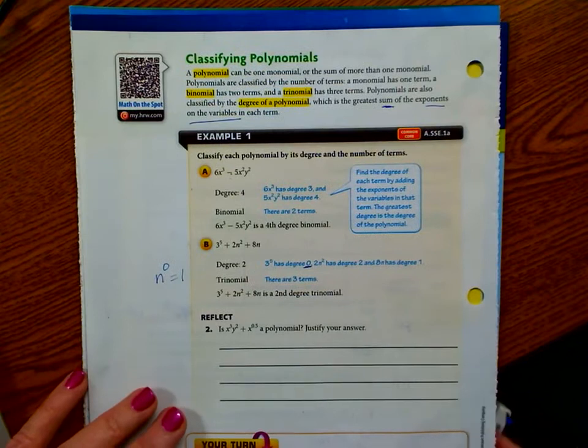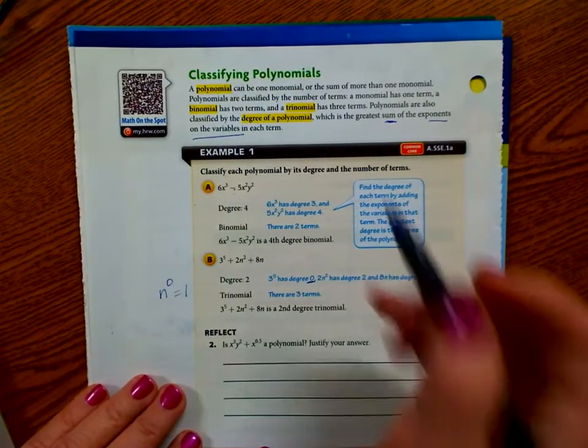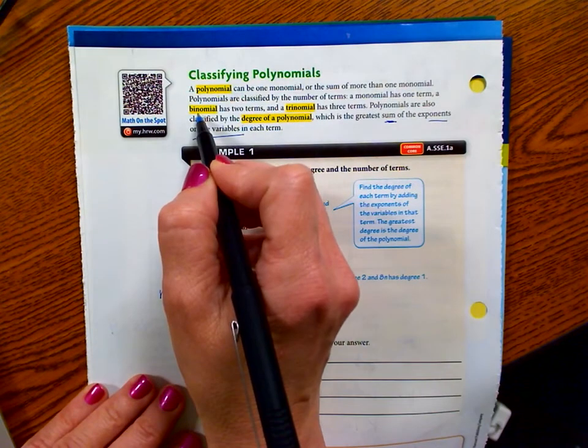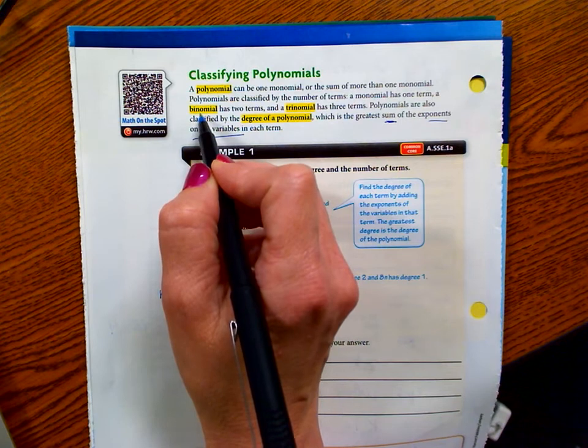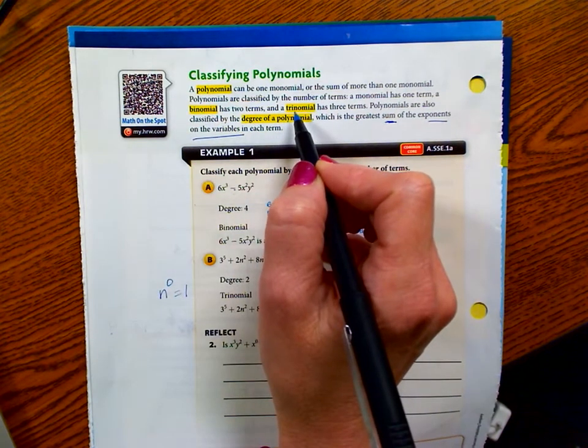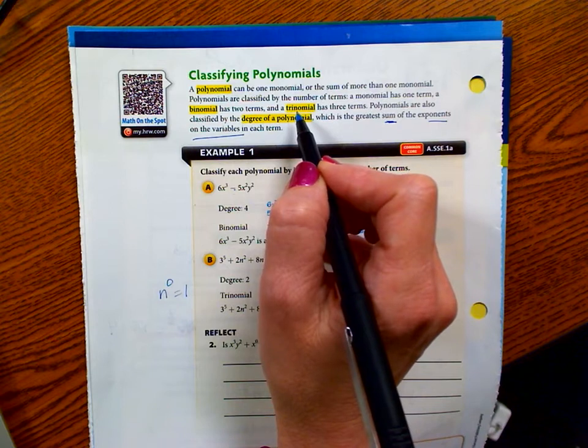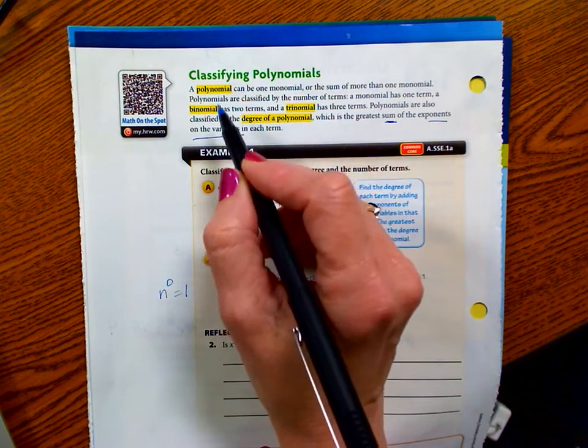So the thing is, a monomial—if you have more than one monomial, then we call it a binomial. So two terms is a binomial, three terms is a trinomial. If you get any further than that, then they're usually just called a polynomial.